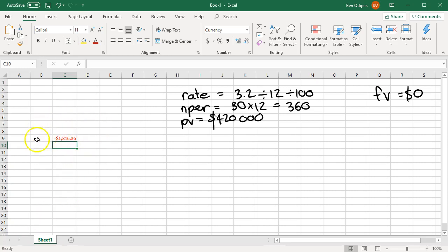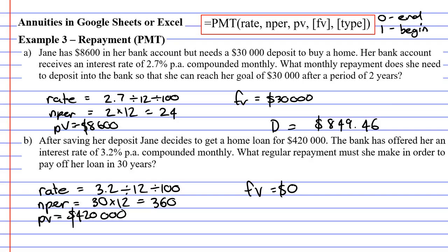We already spoke about repayments being negative in question A, so we're quite happy with the solution — we expected it to come out negative. For our solution, I'm going to write down my repayment as a positive amount: $1,816.36.